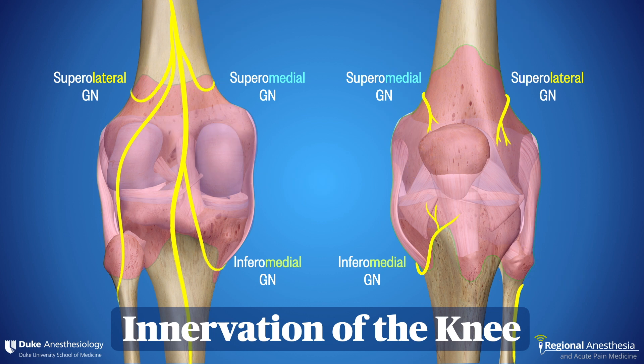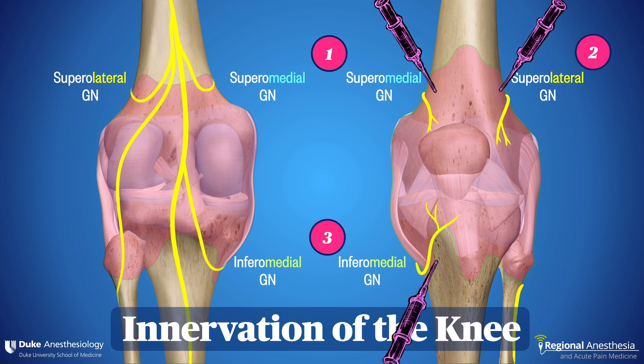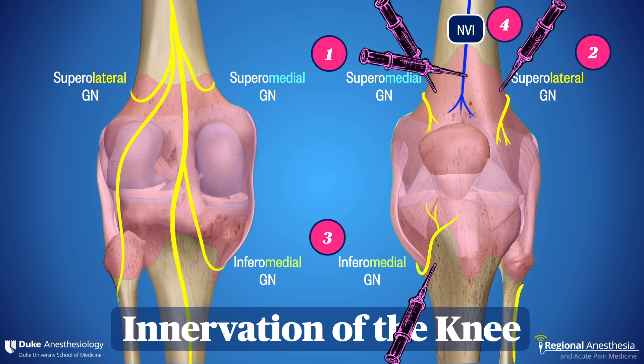So let's get back to our three genicular nerves. The technique involves using ultrasound to visualize the bony anatomy of the knee joint and then depositing local anesthetic at each of these three locations. We also block the nerve to vastus intermedius just above the knee. It's in a reliable location just anterior to the femoral shaft and it's easy to target while you're doing the geniculars.